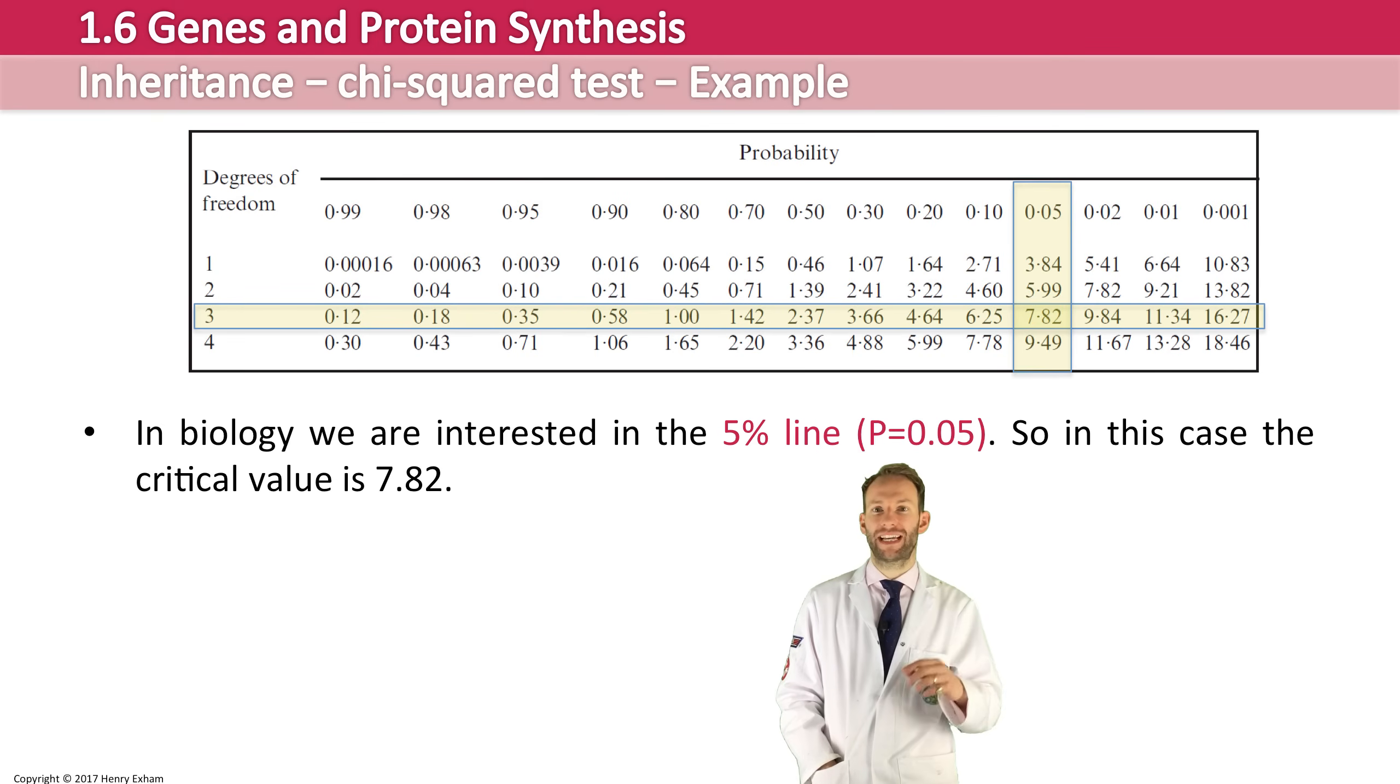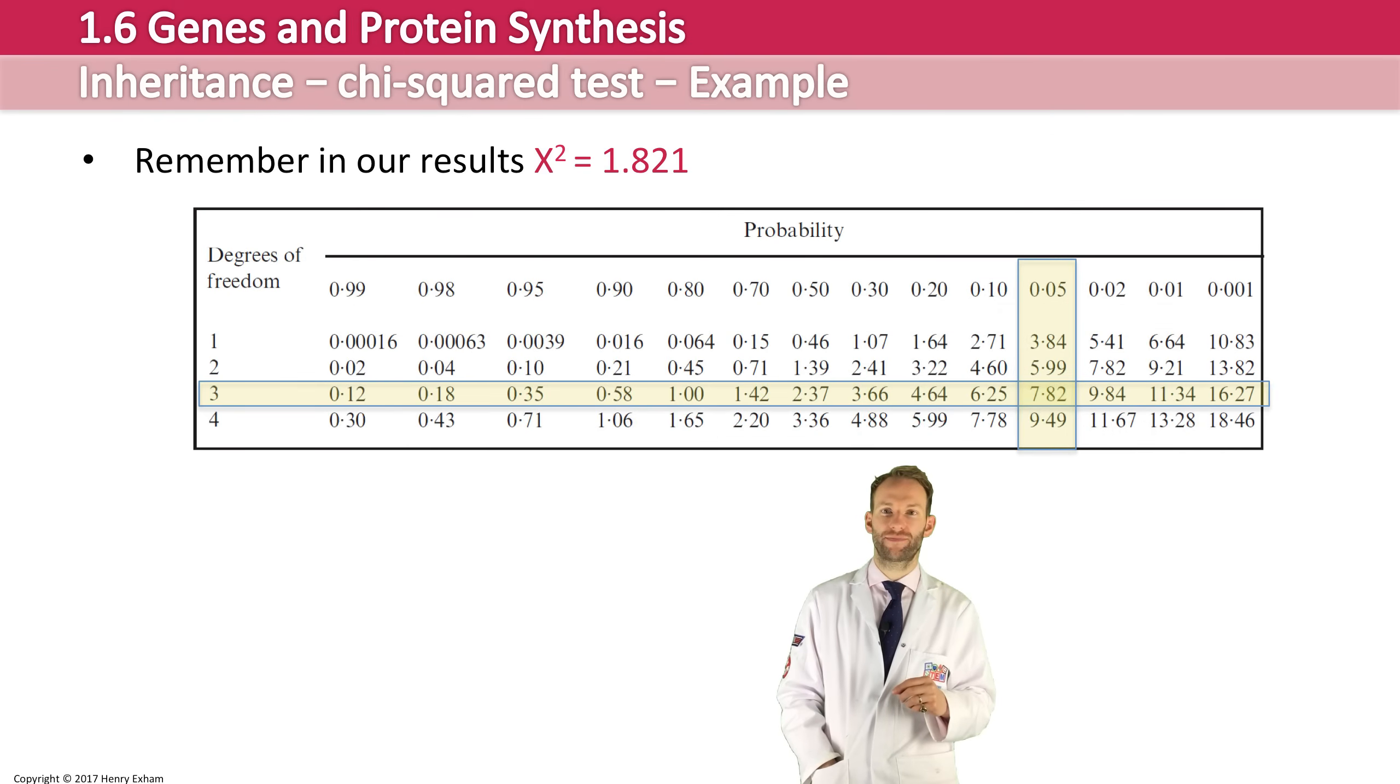So at this point, we'd say it is statistically significant, and we would reject our null hypothesis. Our result is actually around there on the table. It's a lot, lot less. And this means that there is about 75% probability that the differences between observed and expected results are due to chance.